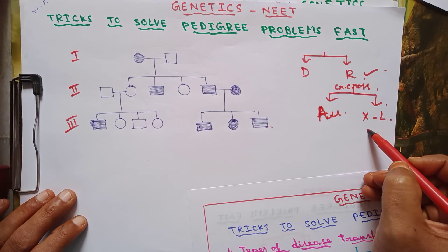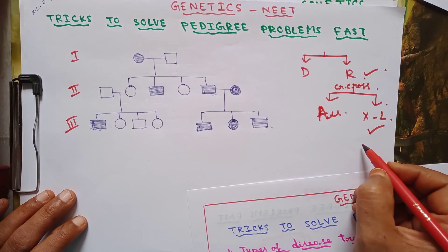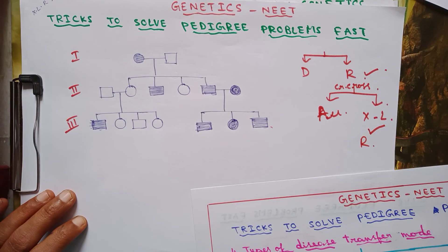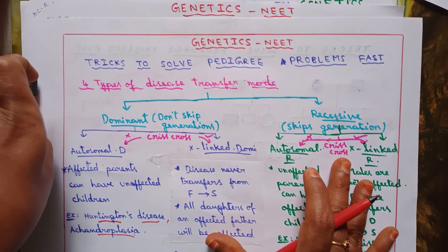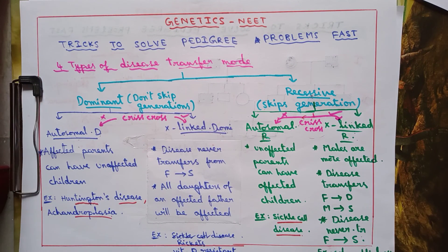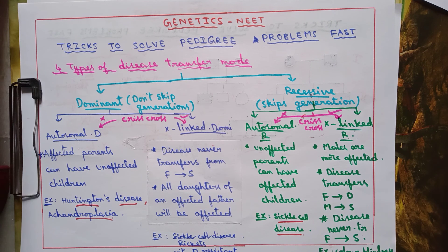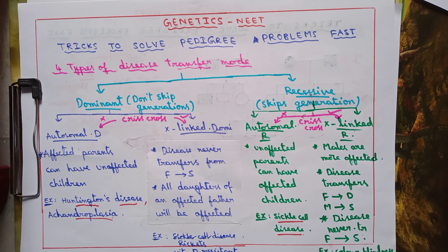In this video I have given tricks to solve pedigree problems very fast, in a few seconds, and demonstrated four different pedigree charts as one example for each type of trait. I hope students understood these tricks and that they will be useful — students can solve pedigree problems using these tricks very quickly. Thank you.